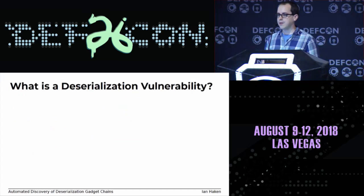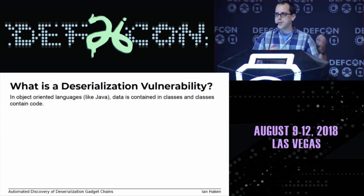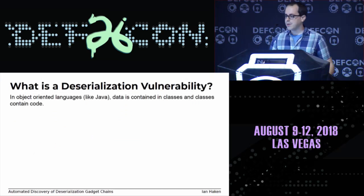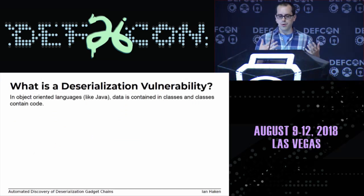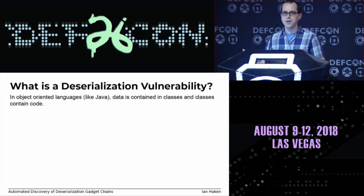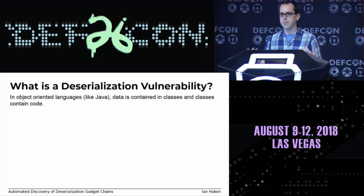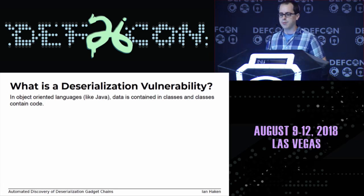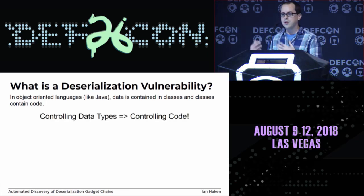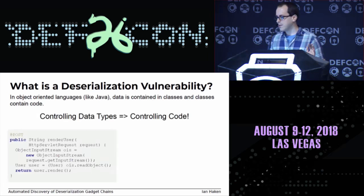So what is a deserialization vulnerability? In object-oriented languages like Java — and I'm mostly going to be using Java examples in this talk — code is contained in classes, and classes hold your data alongside the code. That's the whole point of object-oriented design, and that gives you cool features like polymorphism. But this means that if you control the type of data, if you're able to specify what data type something is, then you're implicitly controlling what code gets run.